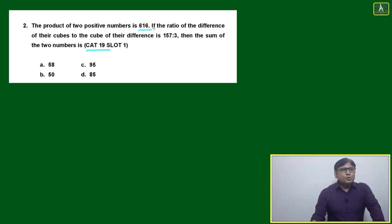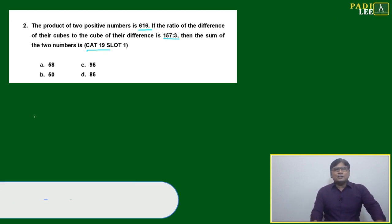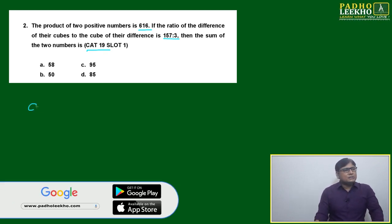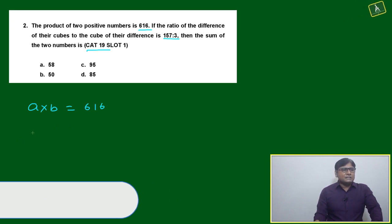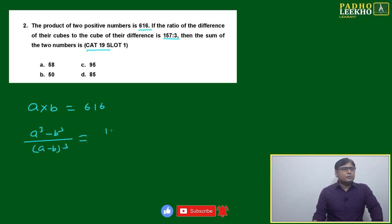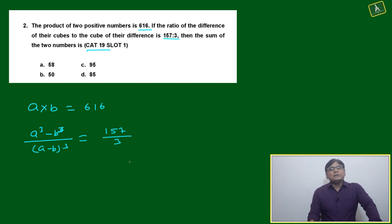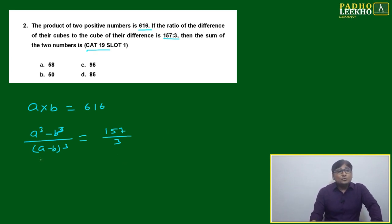The product of two positive numbers is 616. If the ratio of the difference of their cubes to the cube of their difference is 157 to 3, then what is the sum of the two numbers? If you are good in math, you can set up: a times b equals 616, and (a cubed minus b cubed) divided by (a minus b) cubed equals 157 by 3.